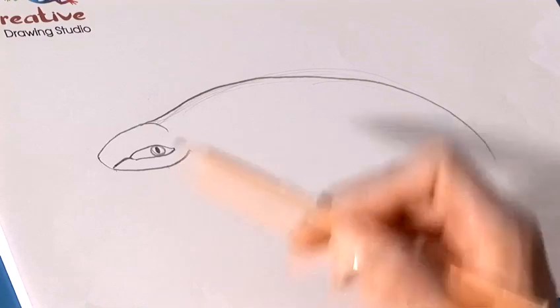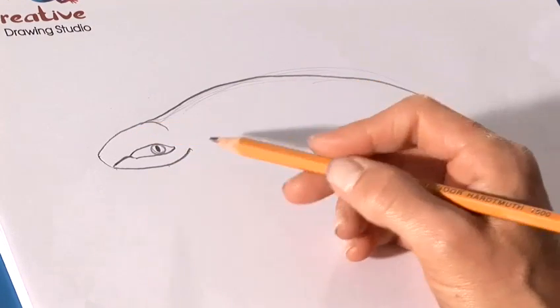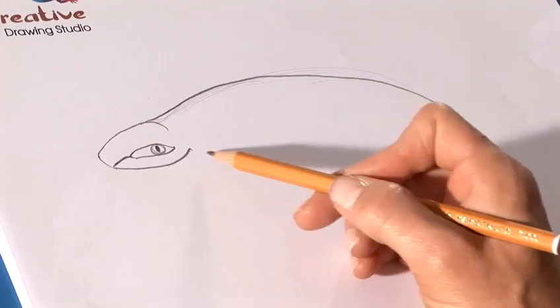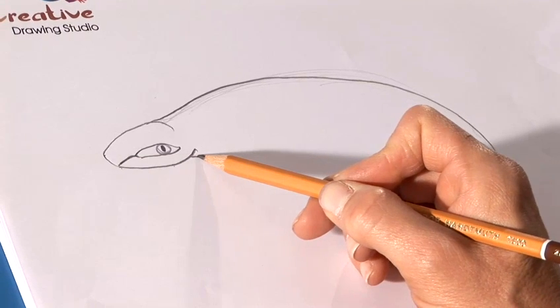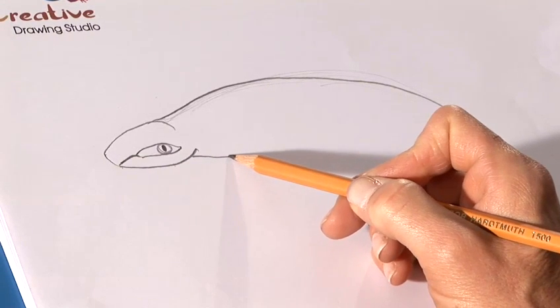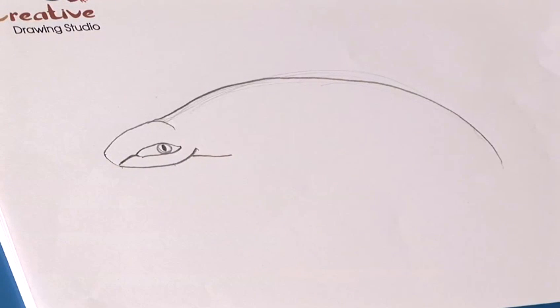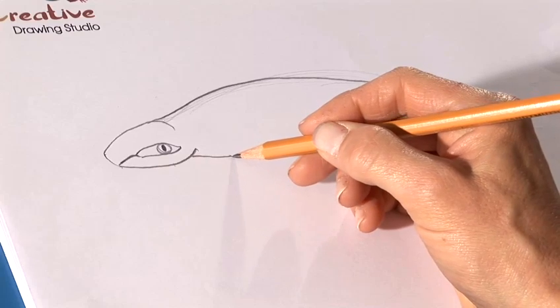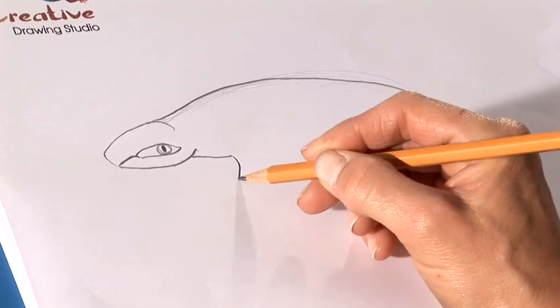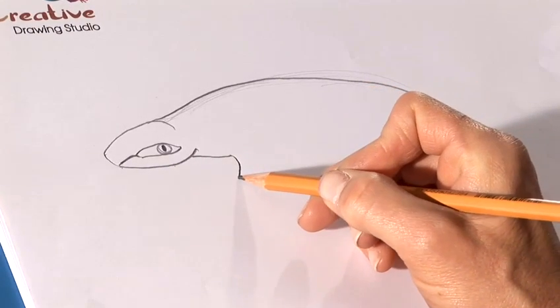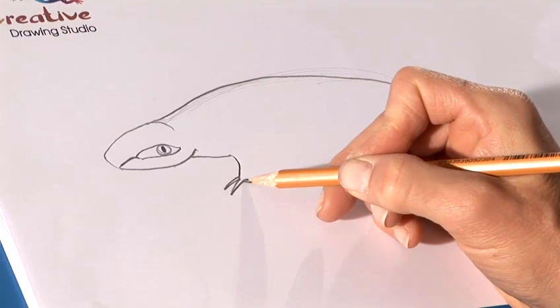Come back to the head and let's start the front arm here by coming in with a straight line like this. Let's bend it down and add some lizard fingers.